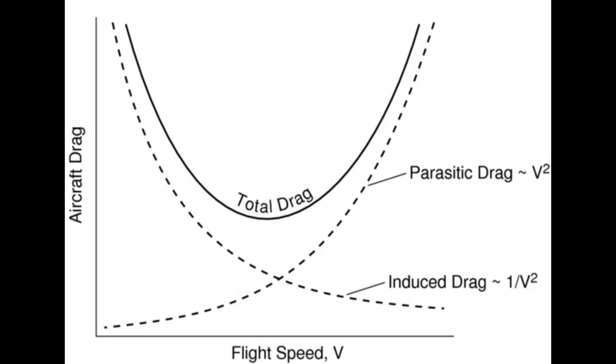Induced drag decreases with airspeed and parasite drag increases with airspeed. We have a handy graph that shows this information. Above those two curves we have a parabola which is the total drag curve, and at the bottom of that total drag curve is where we have the least amount of total drag — this is where your glide speed will exist for your aircraft.